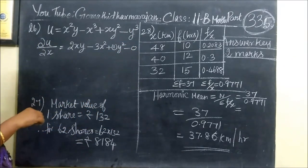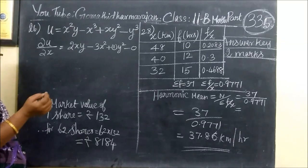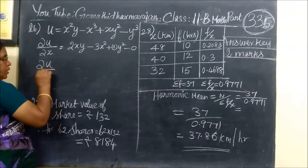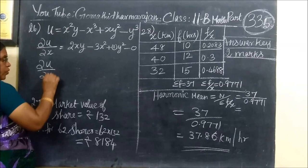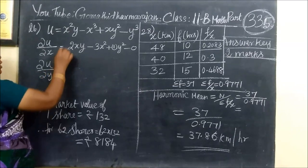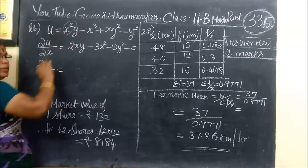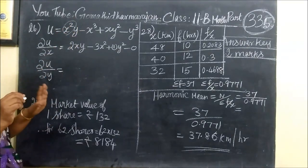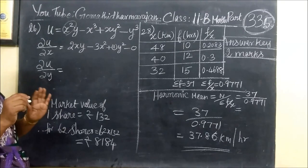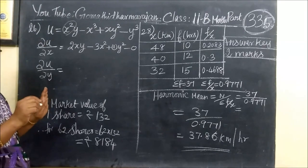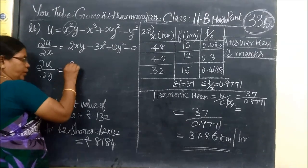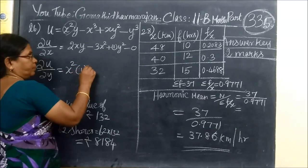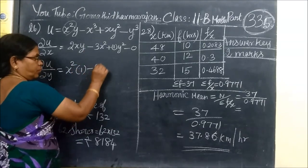That 3y squared will come when you differentiate with respect to y. For du/dy, x squared is treated as a constant. So x squared remains as it is, and y is differentiated with respect to y. Then this constant term becomes 0.